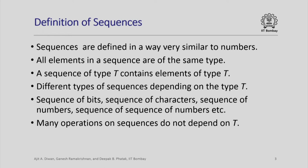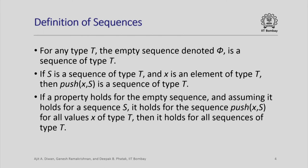These operations only depend on the fact that the elements in the sequence appear in a particular order; it does not really matter what the type of the elements is. We can define these operations in a much more general way. No matter what the type is, we always have an empty sequence denoted by phi, which we consider to be a sequence of type T.